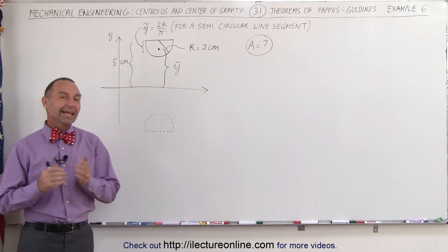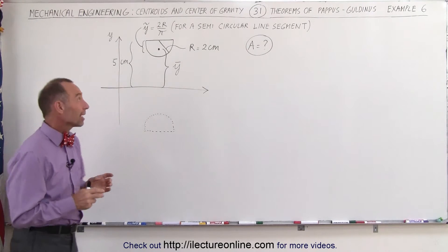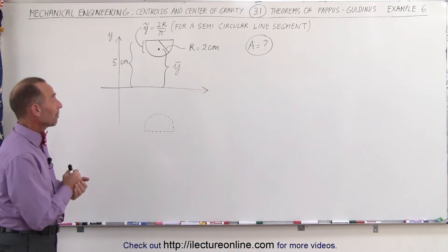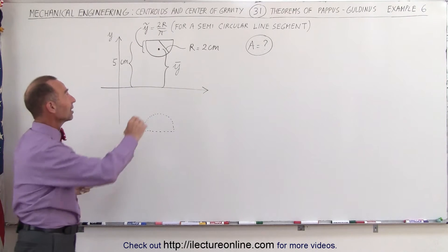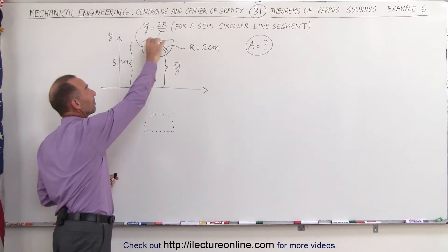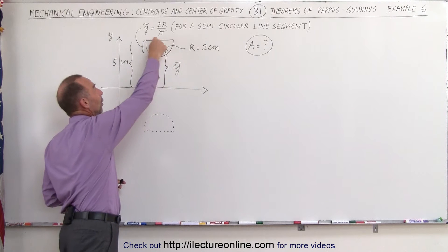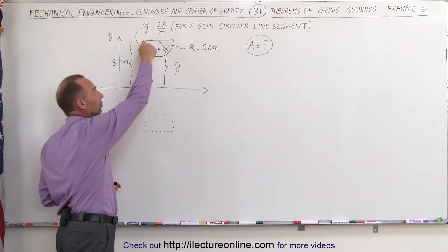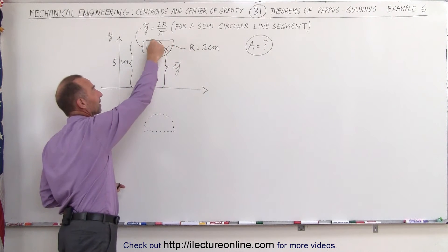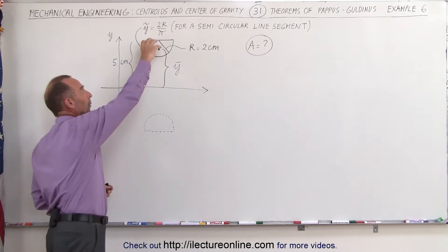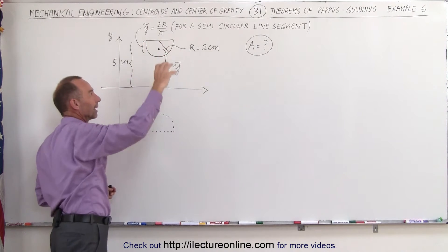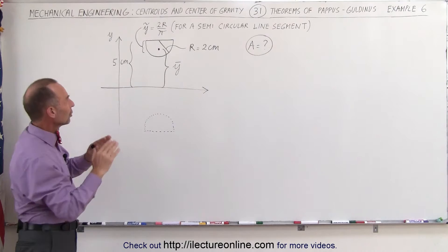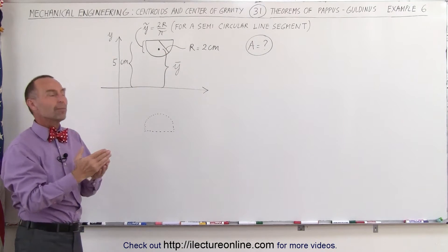Welcome to Electronline. In this example we have to be a little bit more careful applying the theorem of Pappus-Goldenas. What we have here is a semicircle made up of a wire construct, so we're not concerned about the area — we're simply concerned about the length of the wire — and we're going to rotate that about the x-axis, so we end up with like a donut that's only half the shape.